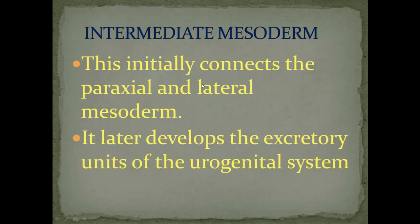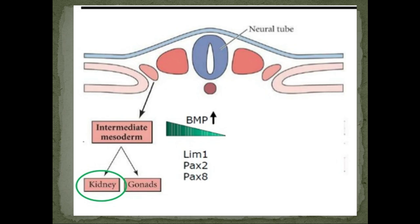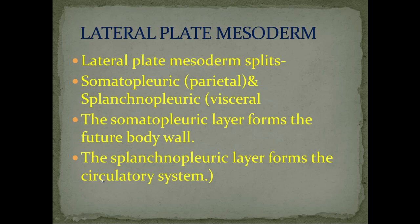The intermediate mesoderm connects the paraxial and lateral mesoderm, and eventually develops into the excretory units of the urogenital system — kidney and gonads. The lateral plate mesoderm splits into two layers: somatopleuric (parietal), which forms the future body wall, and splanchnopleuric (visceral), which forms the circulatory system.